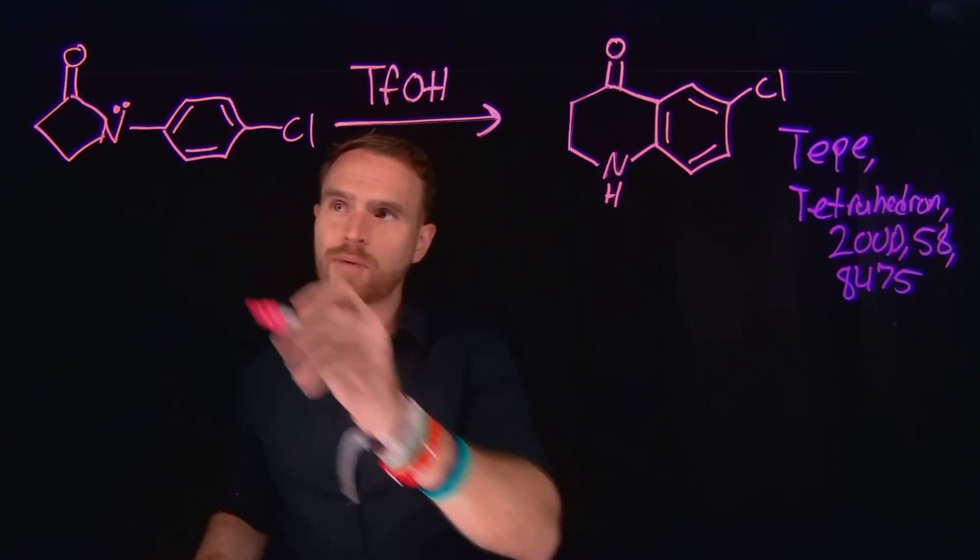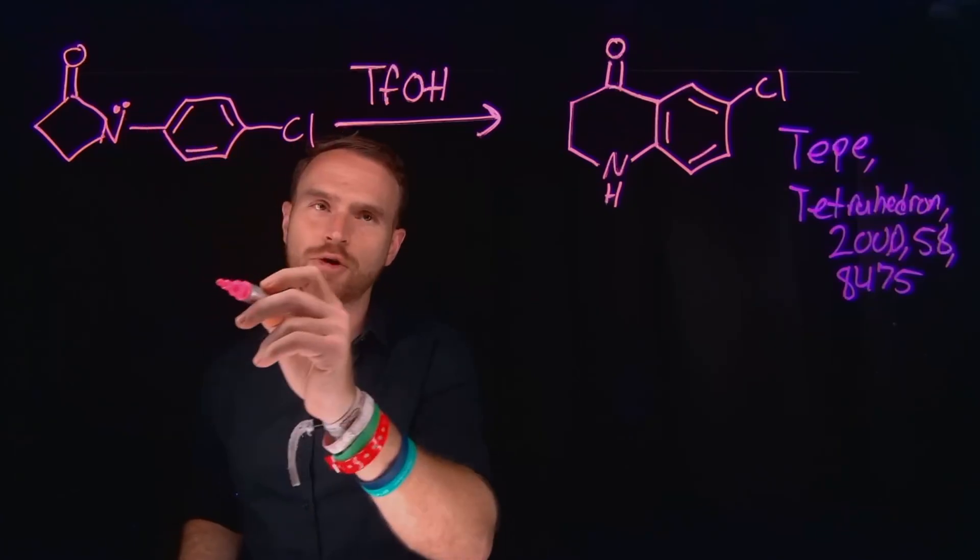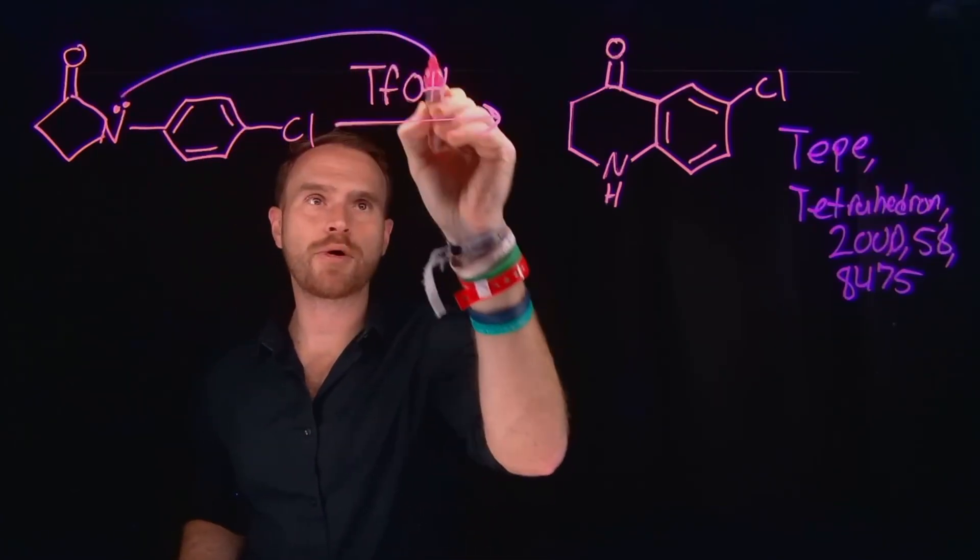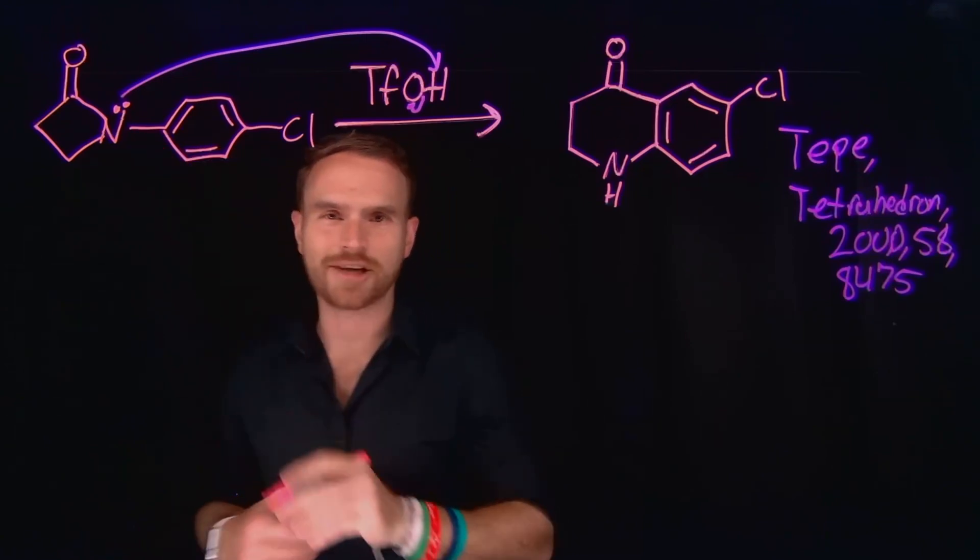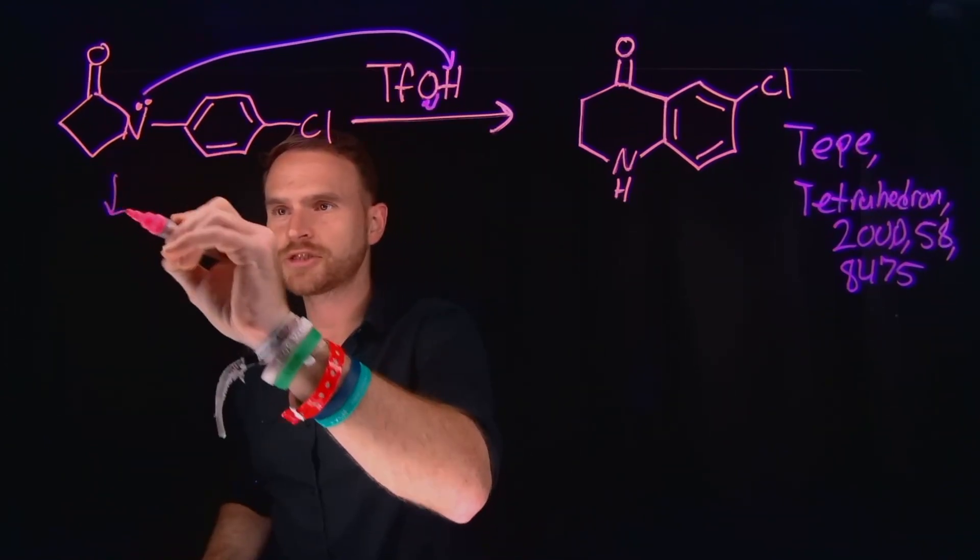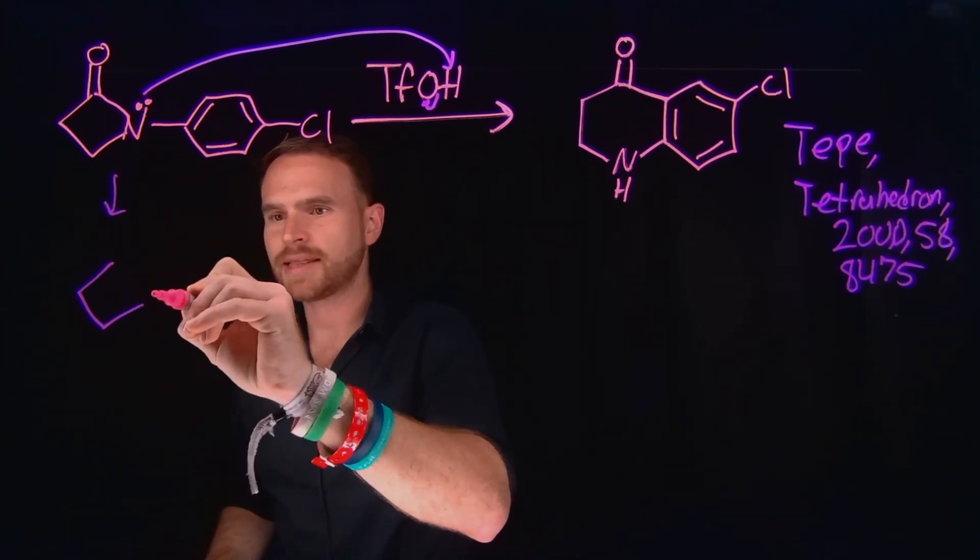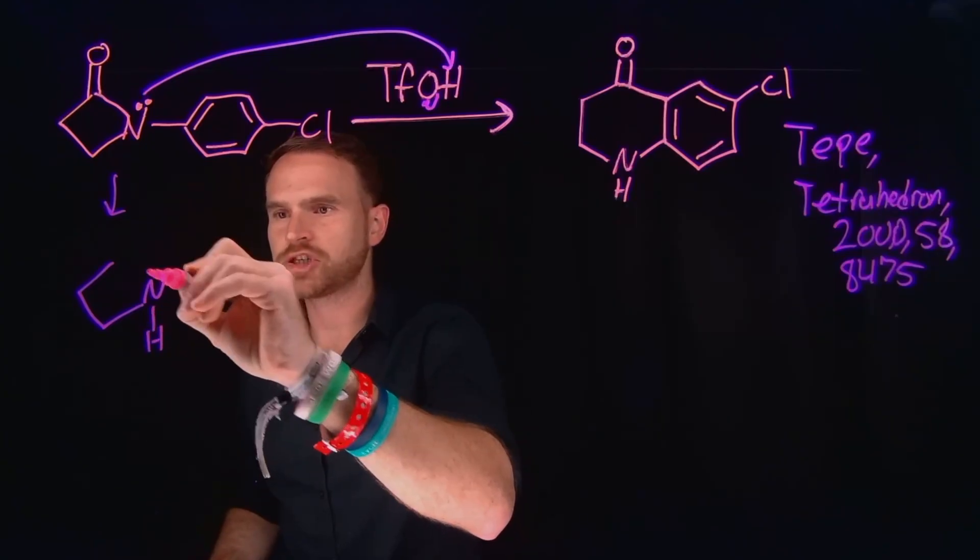What will happen is that this nitrogen with the lone pair on it will actually be protonated by that acid to generate the conjugate base and protonate this nitrogen position. The product of this first step is just the protonated lactam where the nitrogen is now going to be positively charged.